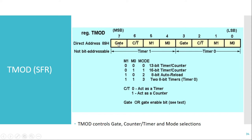The use of this Gate bit we have seen in the previous video. The next bit is C/T̄. This bit is used to decide whether the timer will operate as a timer or as a counter.